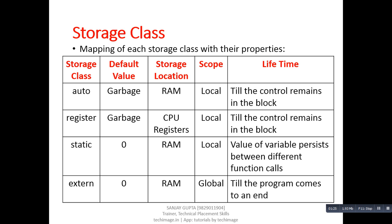This is the table which is the combination of all four storage classes along with their four properties. First, let's discuss the auto storage class. In case of auto: the default value is garbage, its storage location is RAM, its scope is local to the block in which it is declared, and lifetime means till the control remains in the block. If the control of the program shifts to another block, the value of the automatic variable automatically dies.